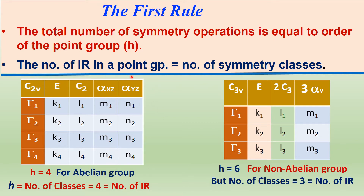For an abelian group, any two symmetry operations are commutative, meaning A times B equals B times A. Whereas for C3V, there are six symmetry operations — three plus two plus one equals six — therefore the order of the group is six, H equal to six.